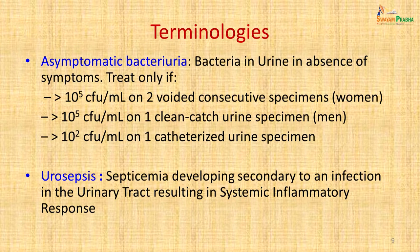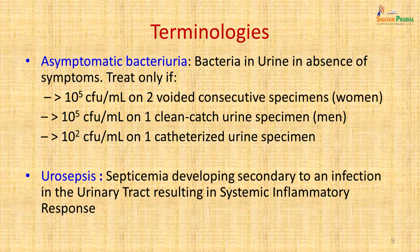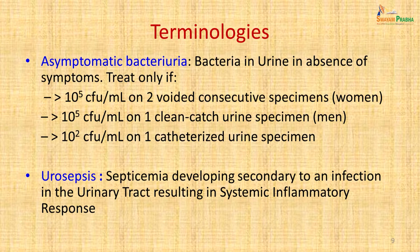Important terminology: asymptomatic bacteriuria is when bacteria are detected in urine by culture but the patient has no symptoms. It should be treated if more than 10⁵ organisms per ml are found on two consecutive voided specimens in women, or more than 10⁵ colony-forming units per ml in one clean-catch specimen in men, or more than 10² colony-forming units per ml in a catheterized specimen.